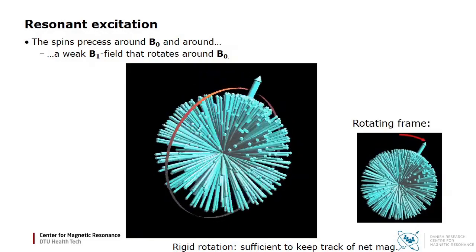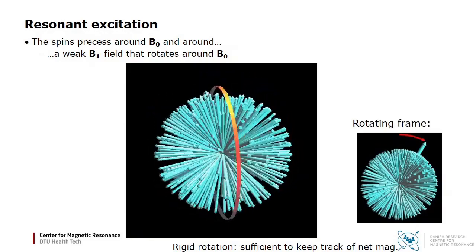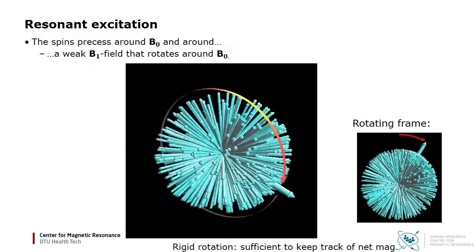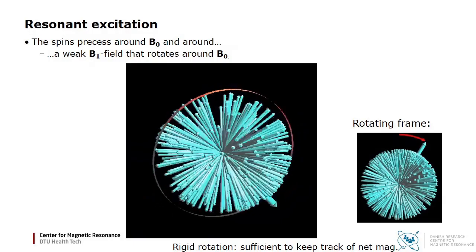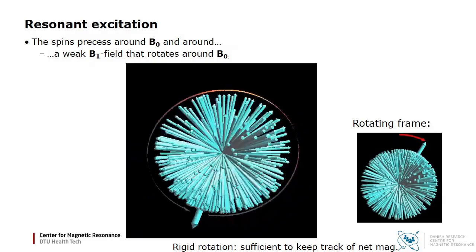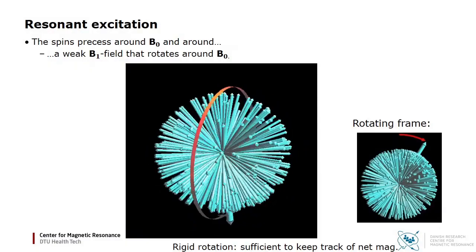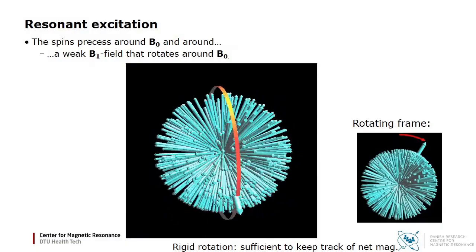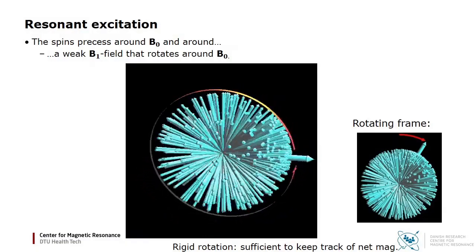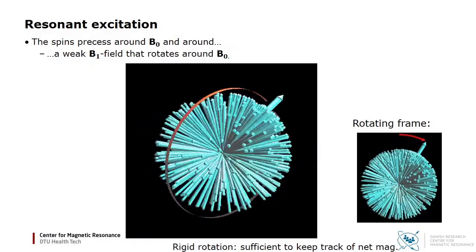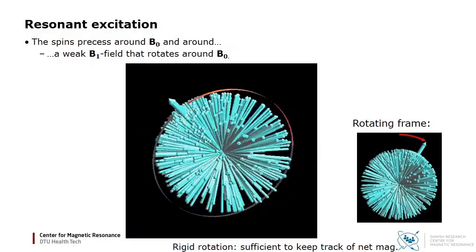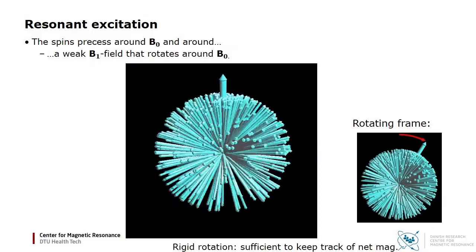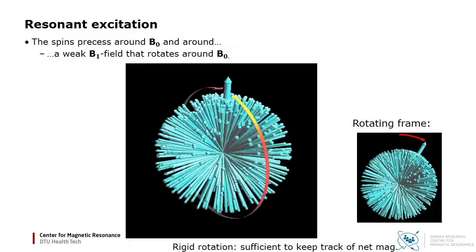Please note that the animation here shows the effect of a resonant rotating B1 field. The simple loop coil that you saw before cannot generate such a rotating field. It will instead generate a linearly polarized field. However, this can be decomposed into two circularly polarized fields rotating in opposite directions. One of them will be rotating together with the precession, and will therefore be close to resonance. The other can safely be ignored, since it rotates opposite the Larmor precession, and is therefore very far from resonance.